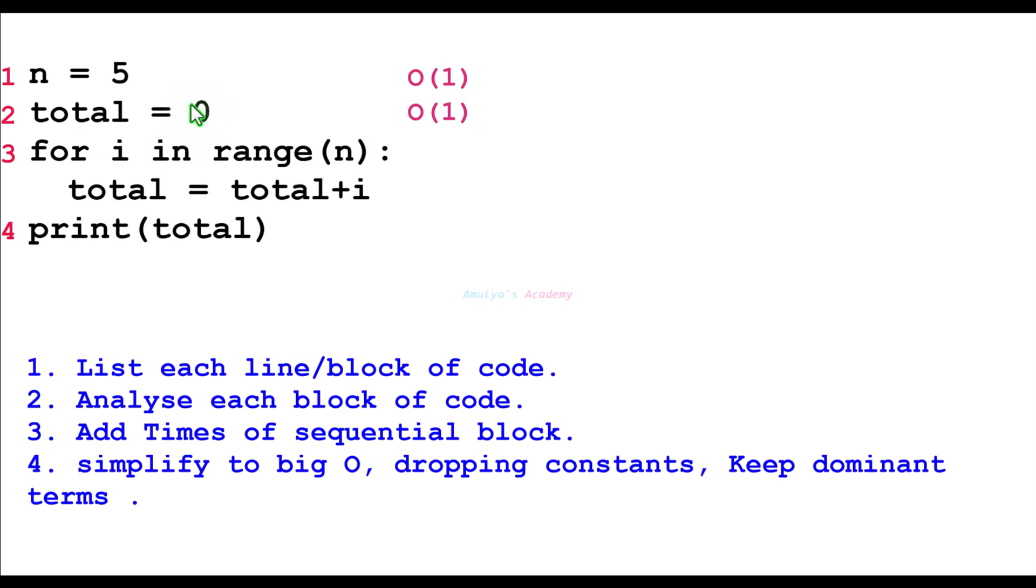Here we can see the for loop and its body. The for loop depends on the number of iterations. Here, this for loop runs n times. If n is 5, it runs 5 times. If n is 10, it runs 10 times. If n is 15, it runs 15 times, right? That's why it takes Big O of n. It depends on n.